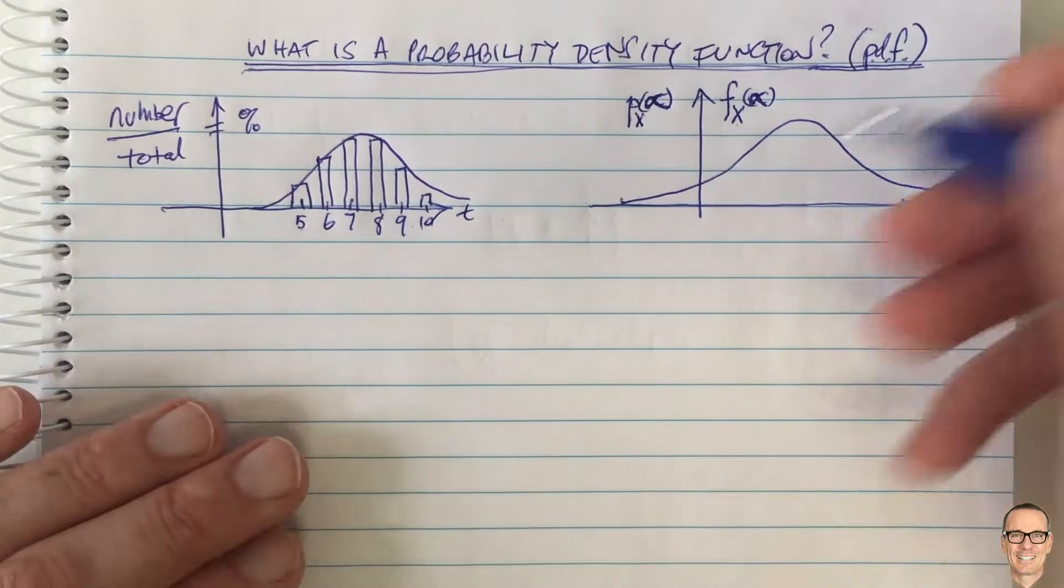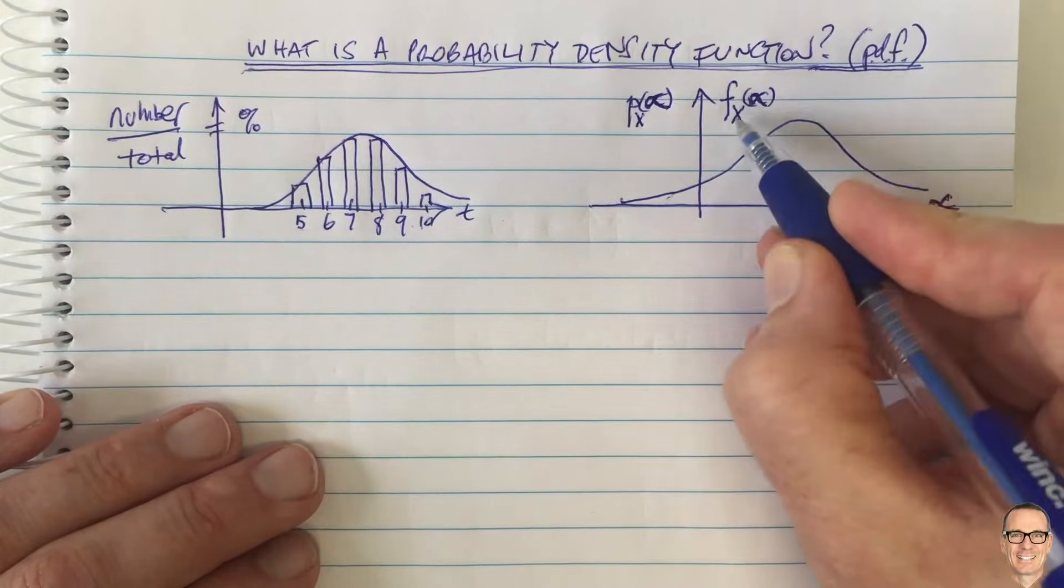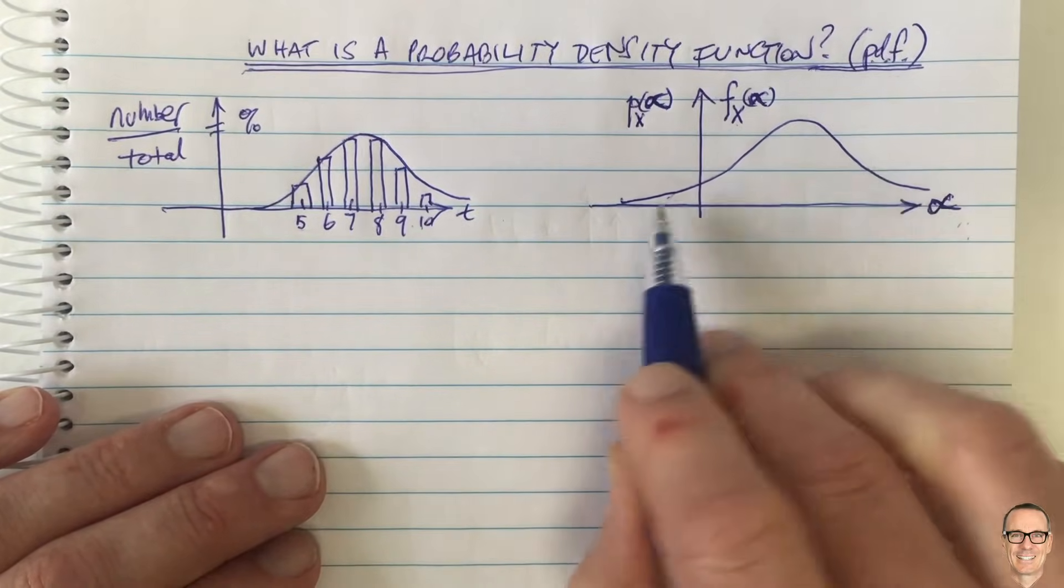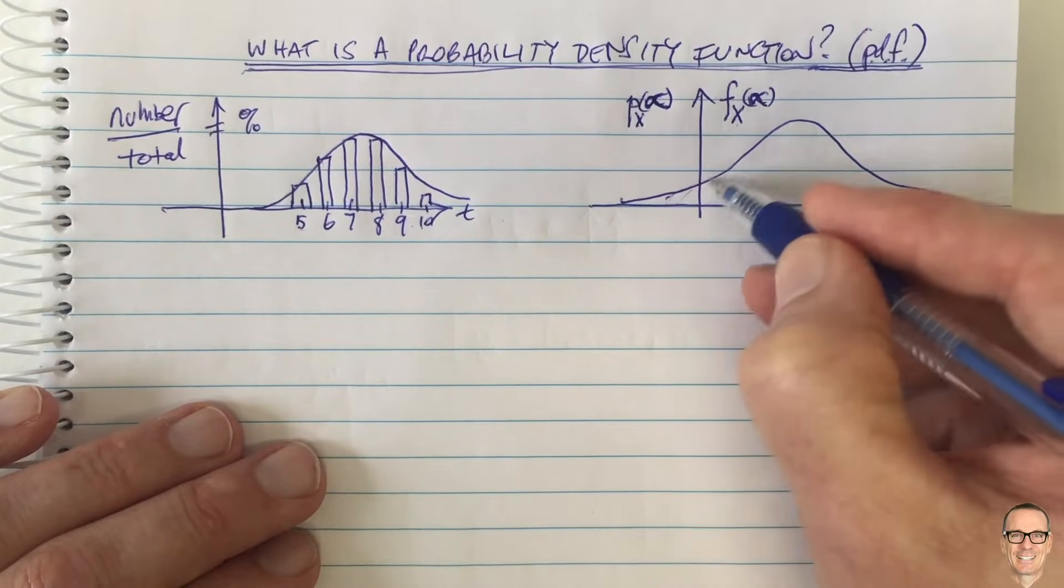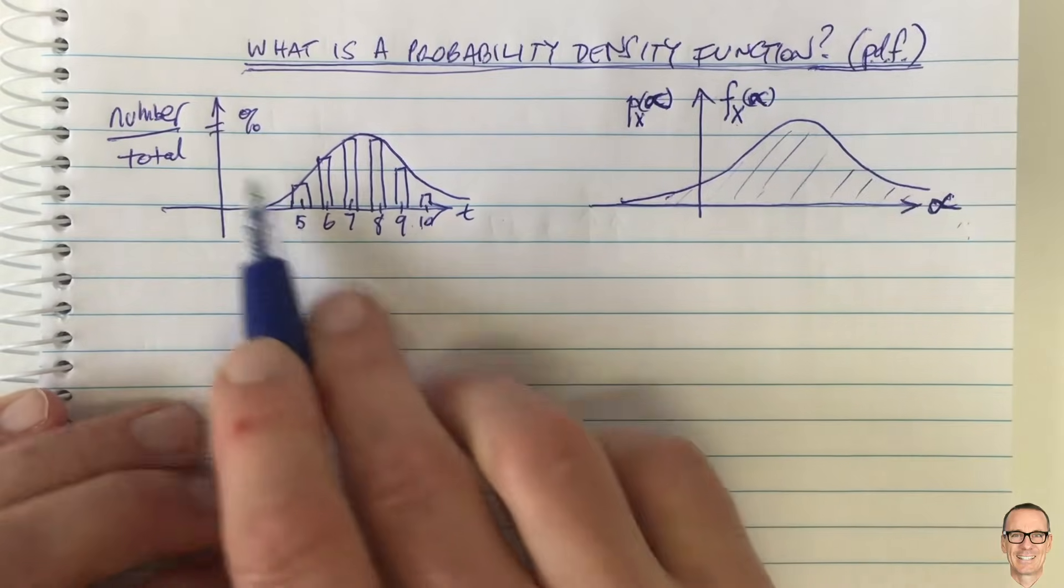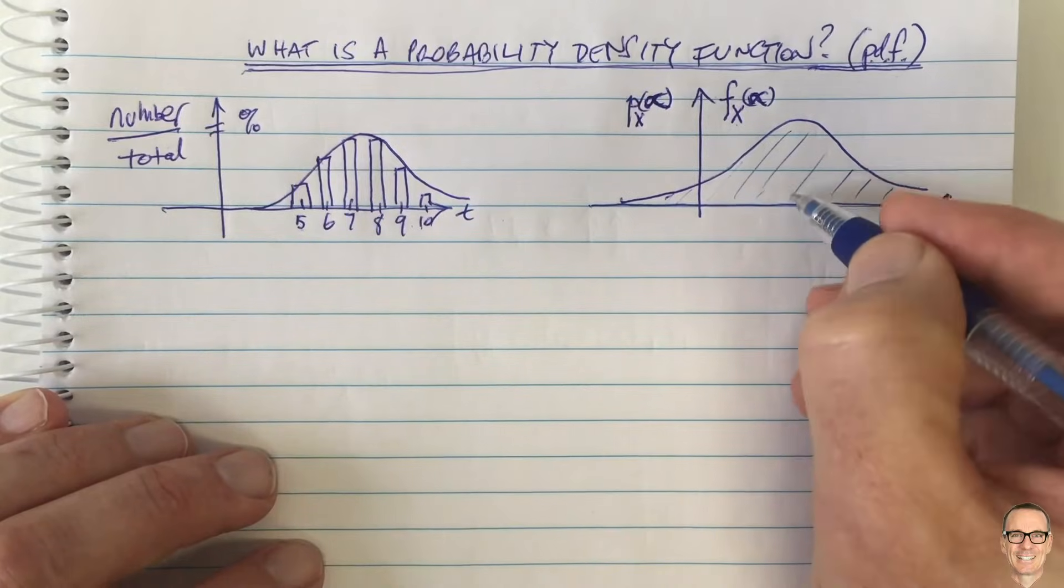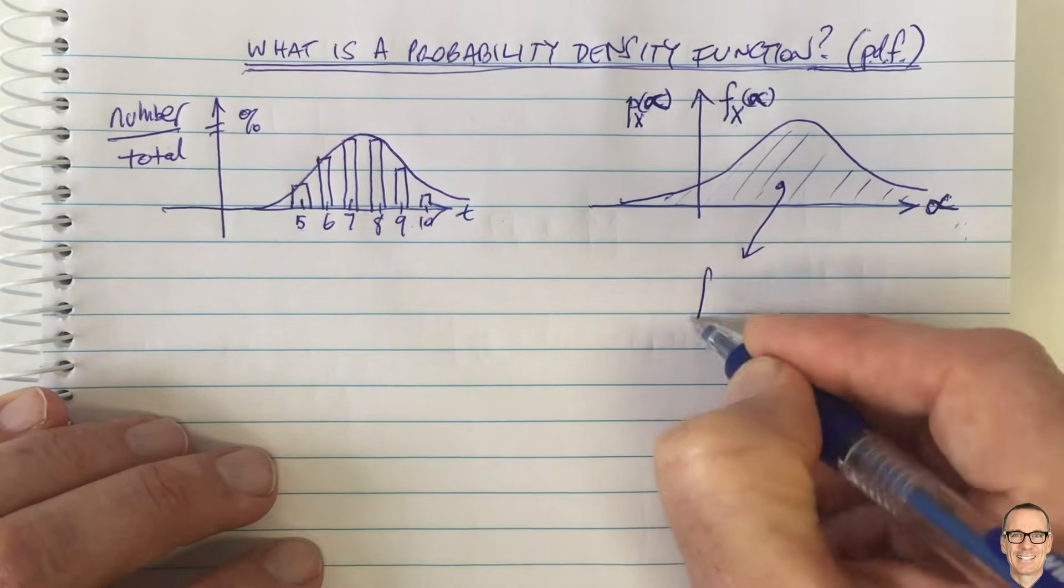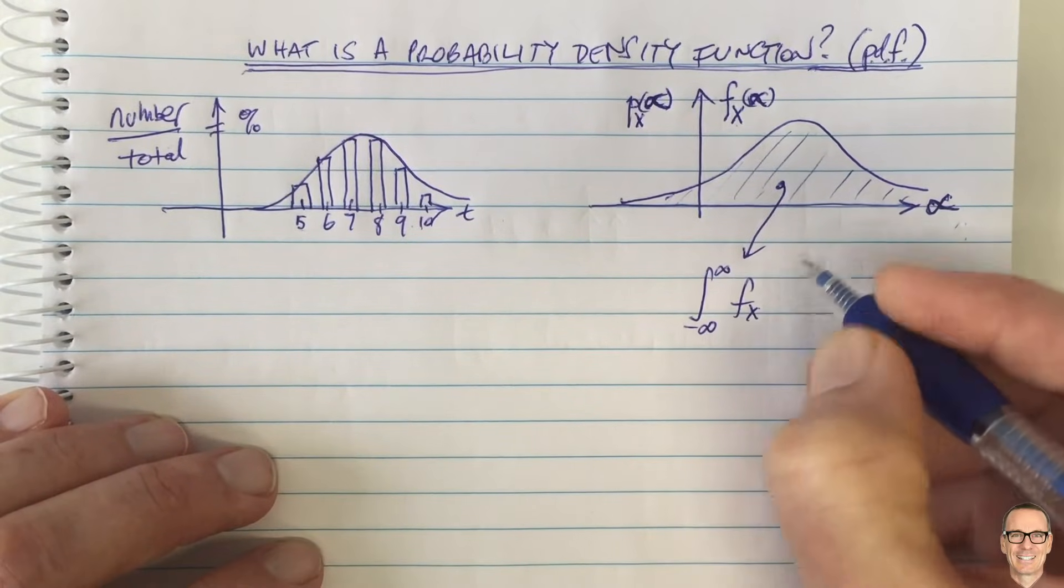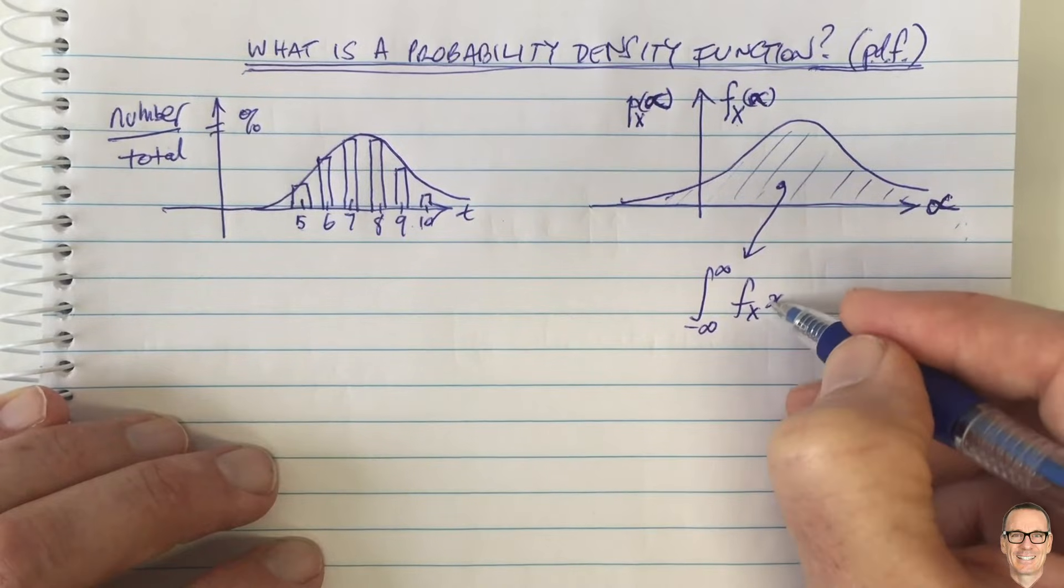Okay, now what exactly is this? Well, one thing we know about this is that the total area, what exactly is the PDF? What exactly is this curve telling us? Well, one thing we know is that the area under here equals 1. It's a bit like this percentage here. All of them have to add up to 1. So this area equals 1.